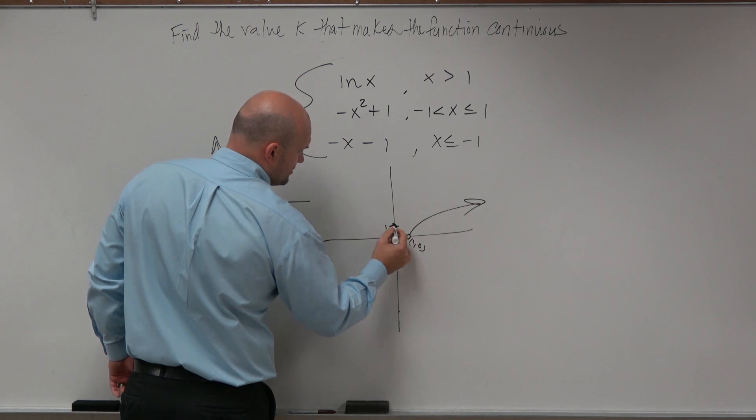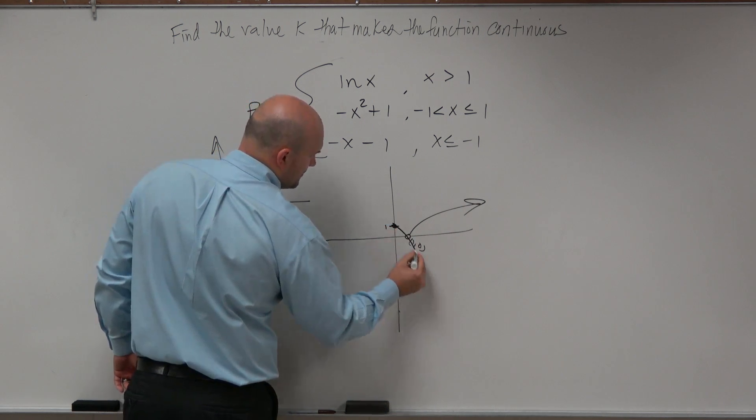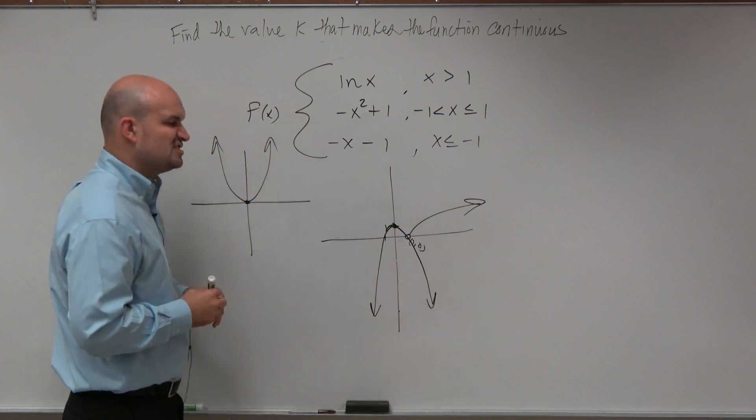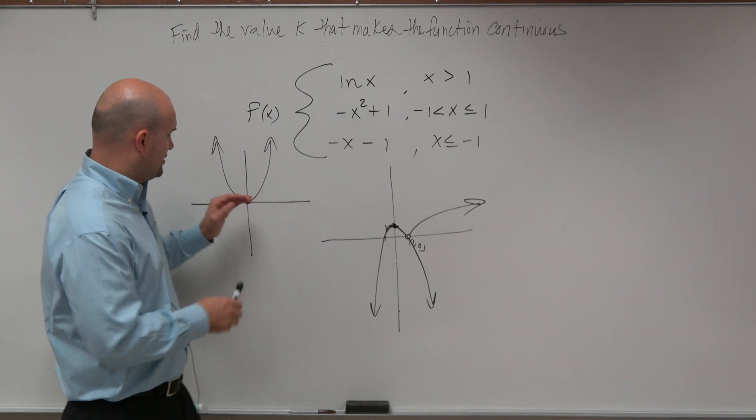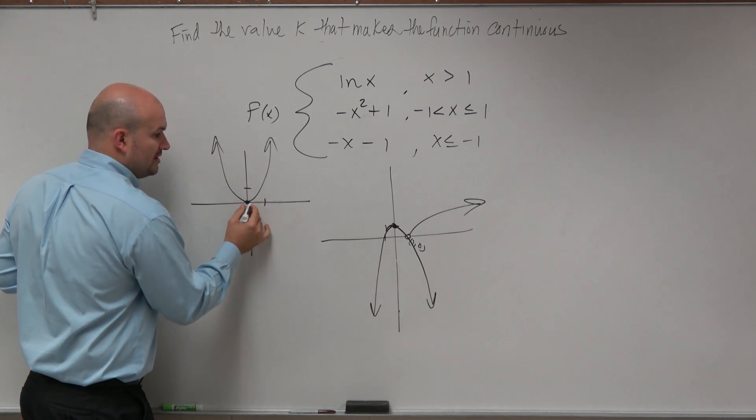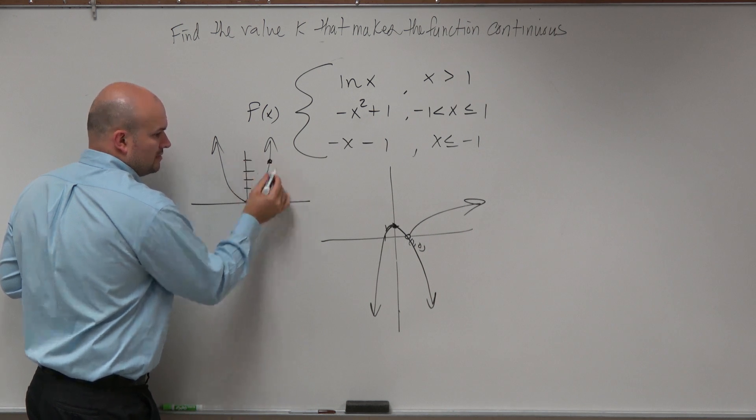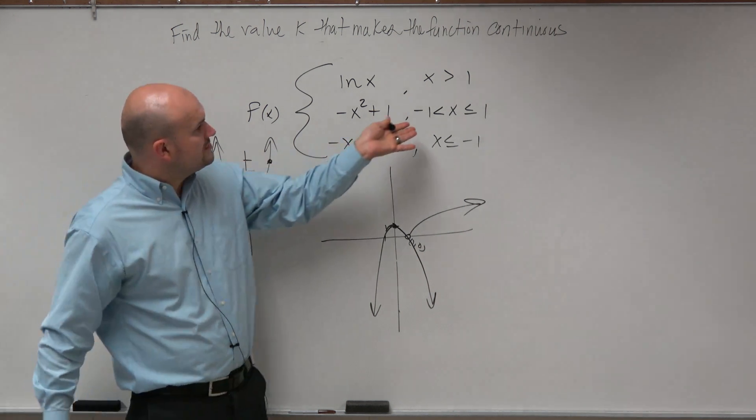That would be 1. So we're going down 1. So it looks something like that. Because remember, it goes over 1, up 1, like 1 squared is 1, 2 squared is 4.